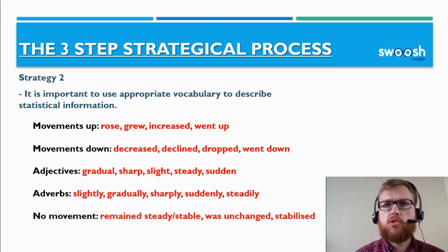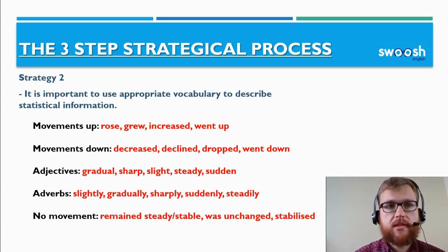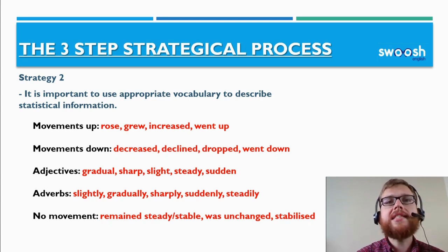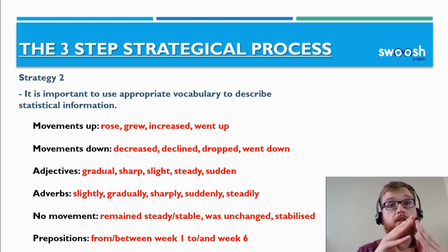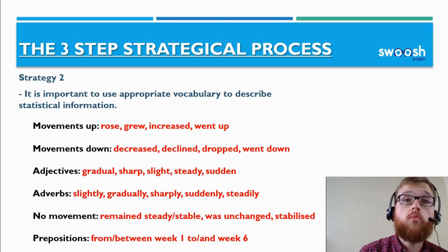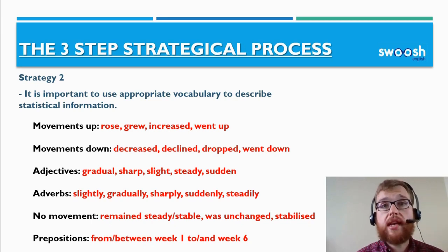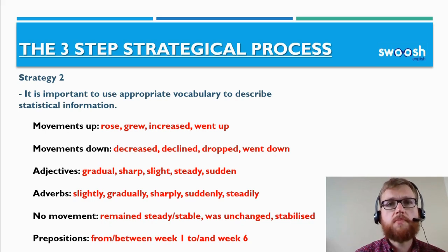If there was no movement in the chart, we can use phrases such as: remain steady, stable, was unchanged, stabilized. Finally, think about the prepositions we can use when talking about the flow of the chart and how the information progressed — for example, 'from between week one and week six.' We have: from, between, to, and, and for our response.